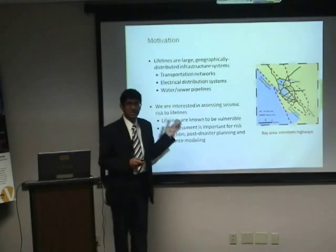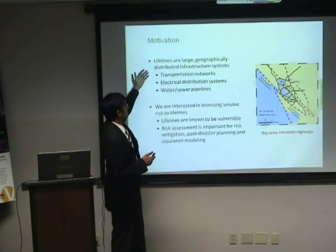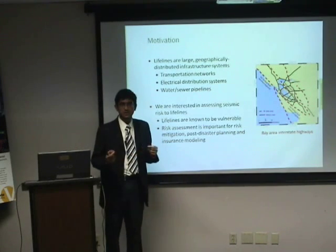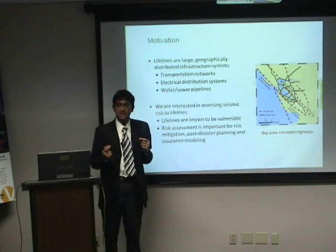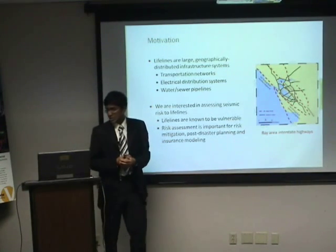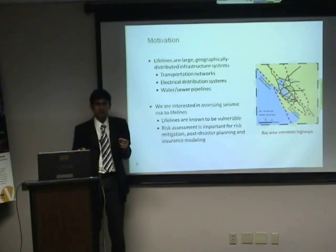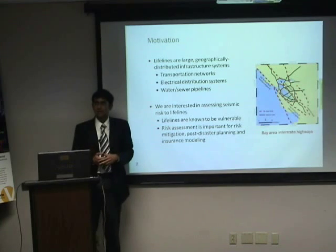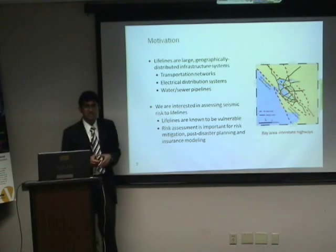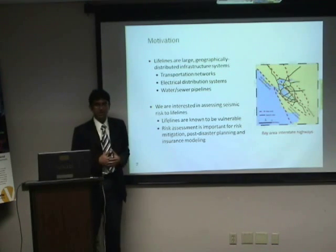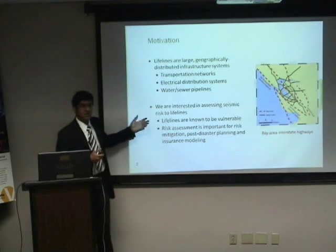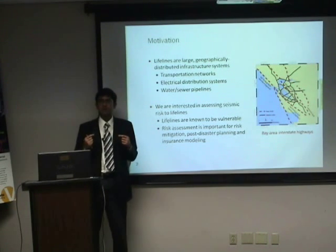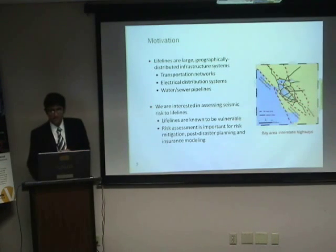Just to give a very brief introduction about what lifelines are — lifelines basically denote large geographically distributed infrastructure systems. You could think of examples such as transportation networks or power distribution networks, which are not located at any particular site but rather are spread over a large geographic area. Lifelines are really important for the well-being of a society, but they tend to be vulnerable during earthquakes and other hazards. There were billions of dollars of losses ascribed to power and transportation failure during the 1994 Northridge earthquake, which tells us why it's important to carry out risk assessments of these lifelines.